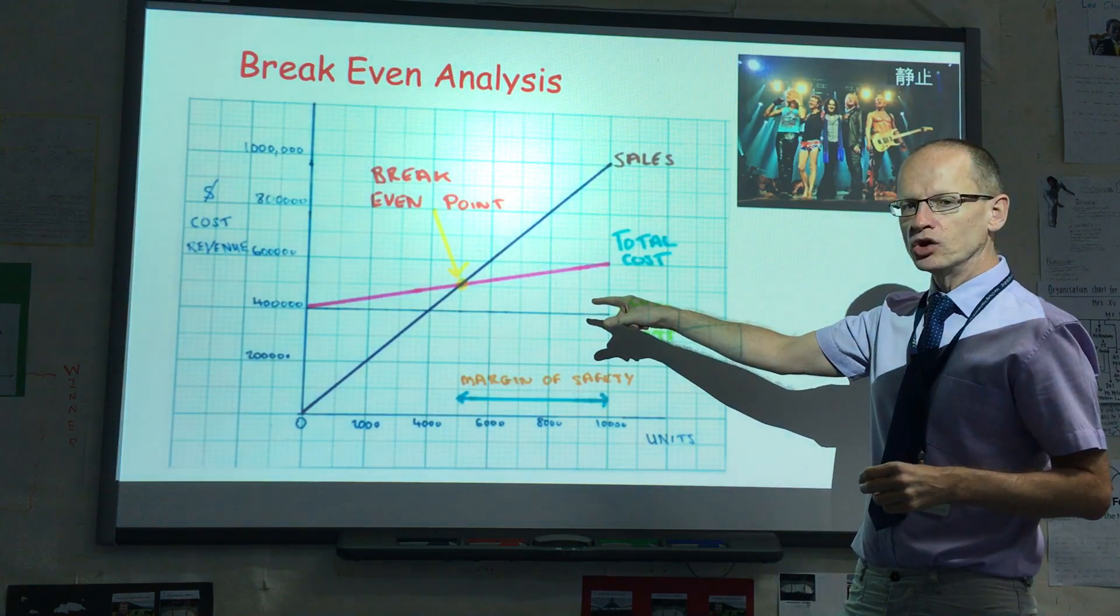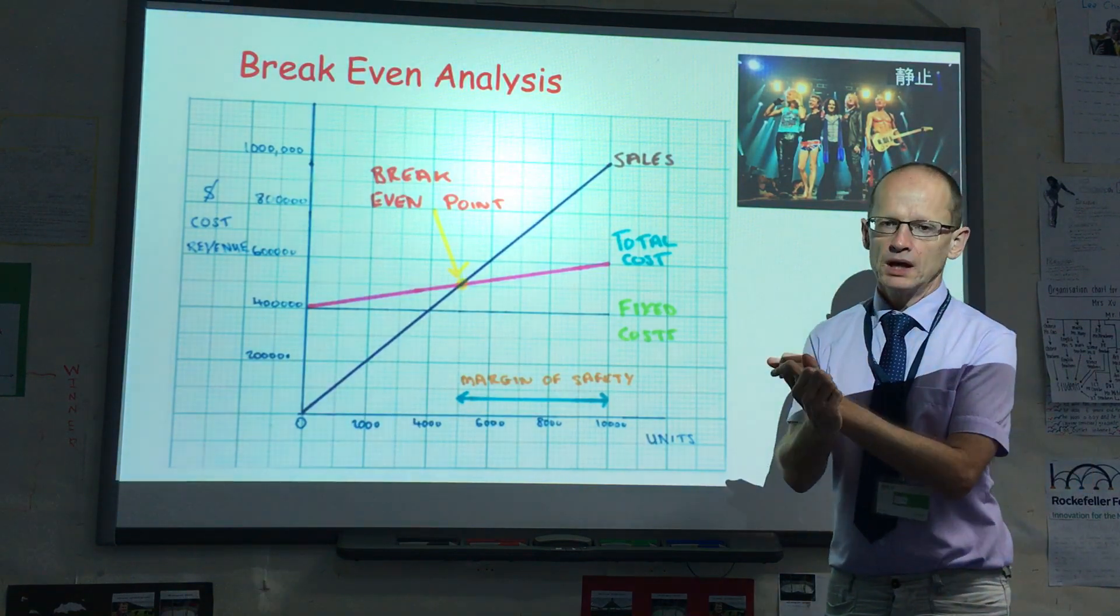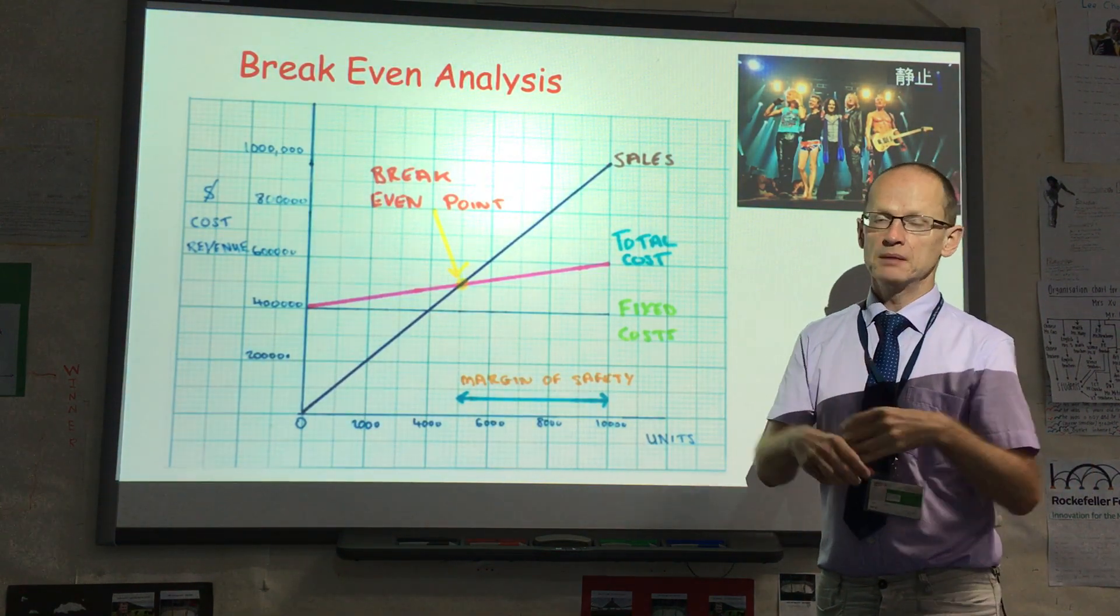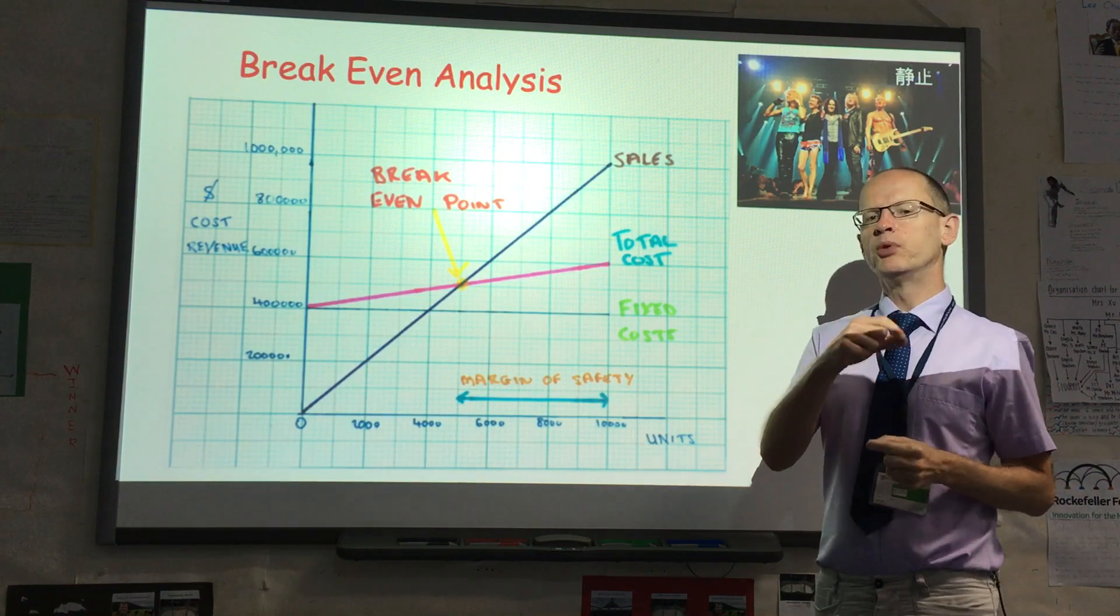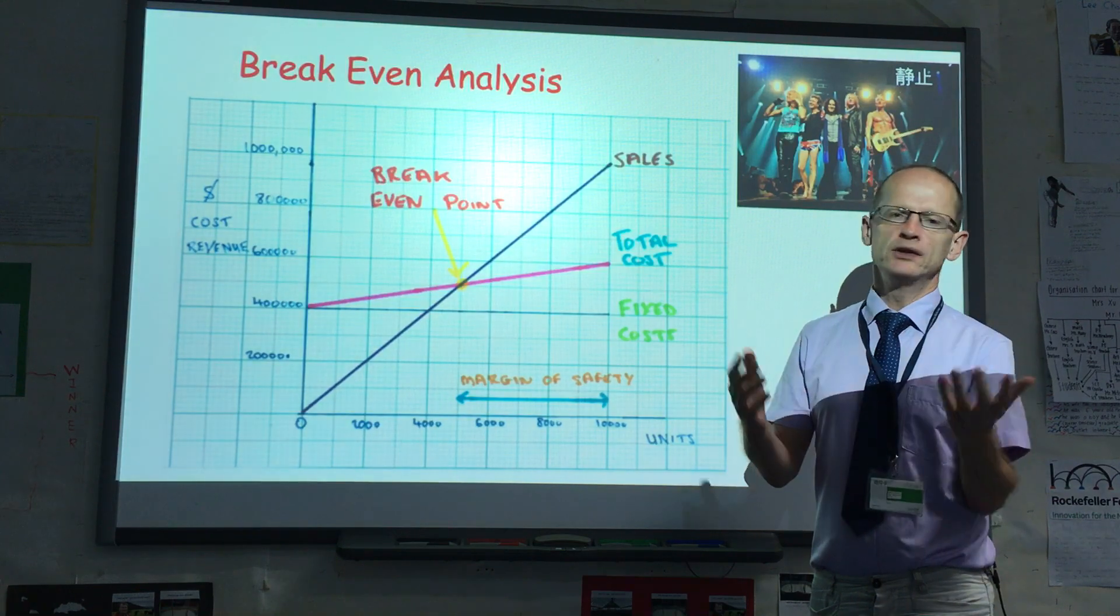The variable costs of $20 per ticket, they could be paying the artist maybe $10 per ticket, but more importantly, paying say ticketmaster or the ticket agent maybe $10 per ticket.